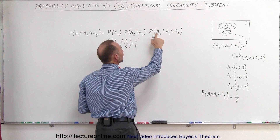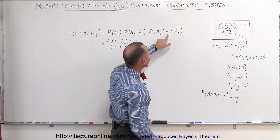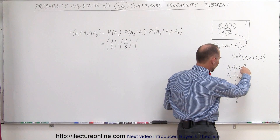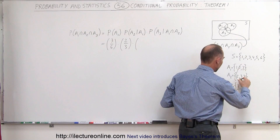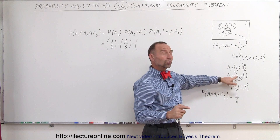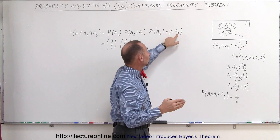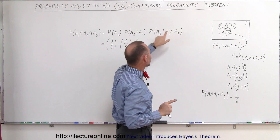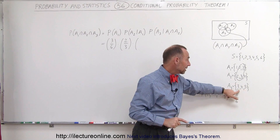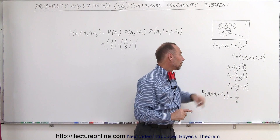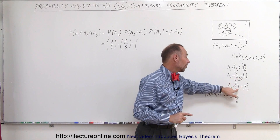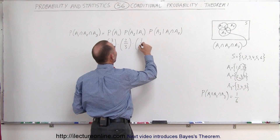Next we find the probability that A3 occurs provided that the intersection of A1 and A2 has occurred. The intersection of A1 and A2 is the numbers 2 and 3, meaning we know we threw either a 2 or a 3. A3 can be a 3, 4, or 5, but only the number 3 is possible from {2, 3}, so the probability P(A3|A1∩A2) is 1 out of 2, or one-half.